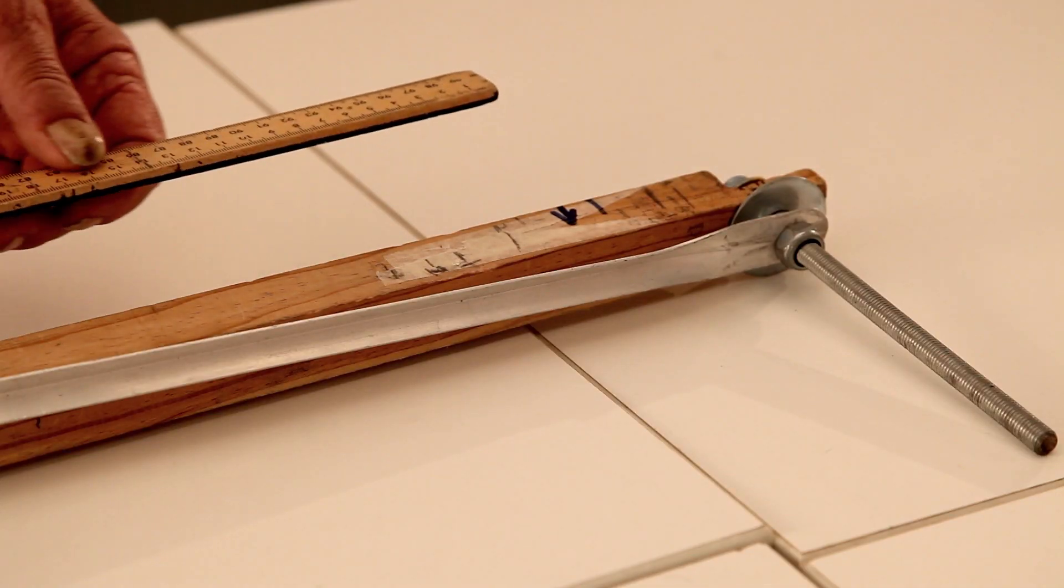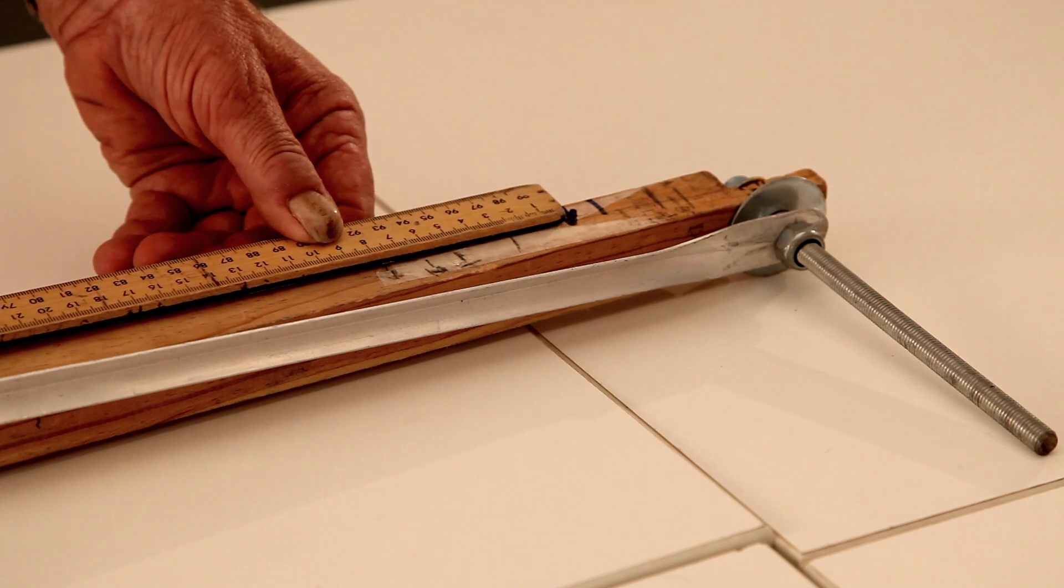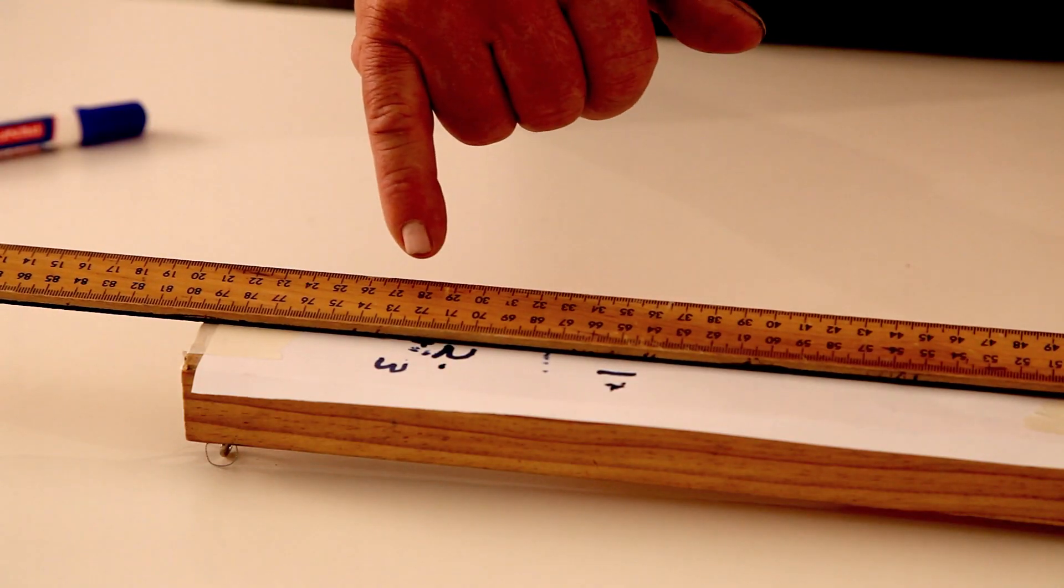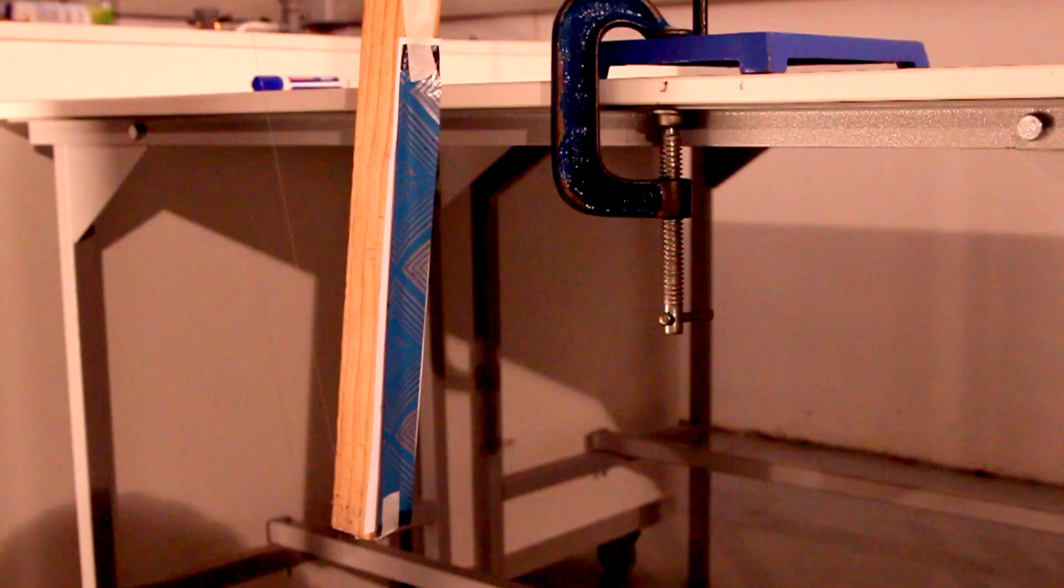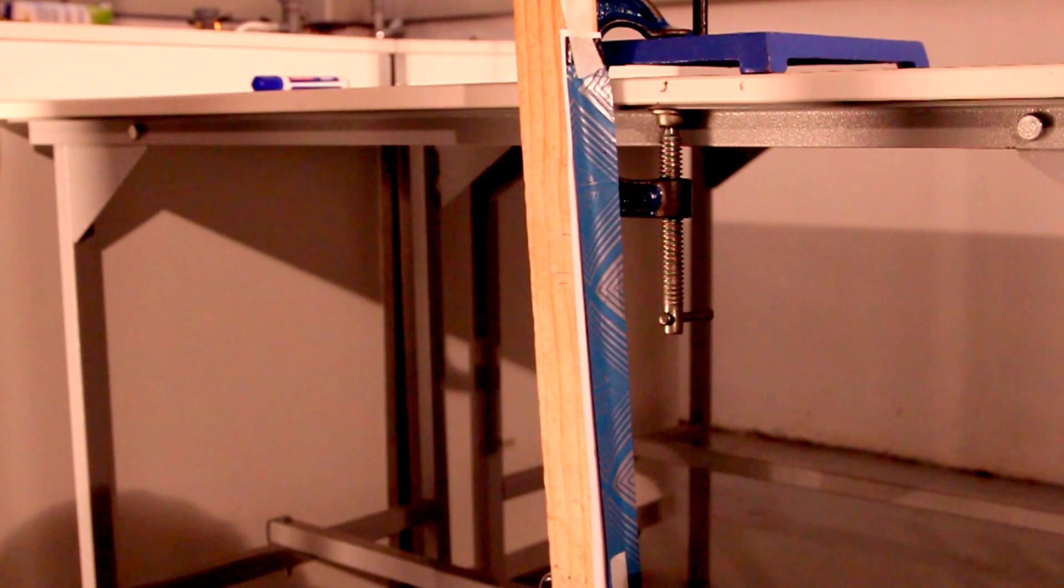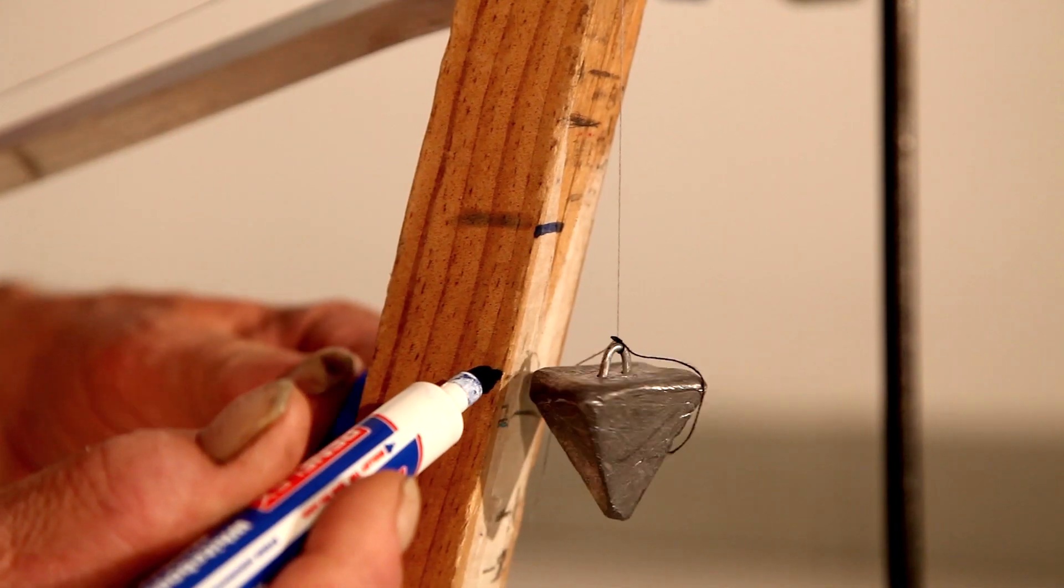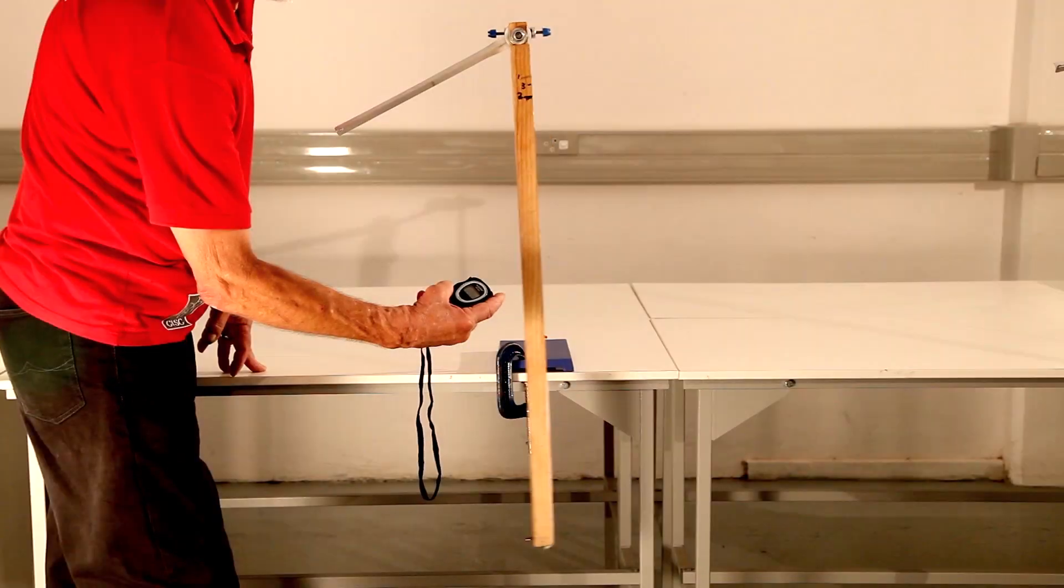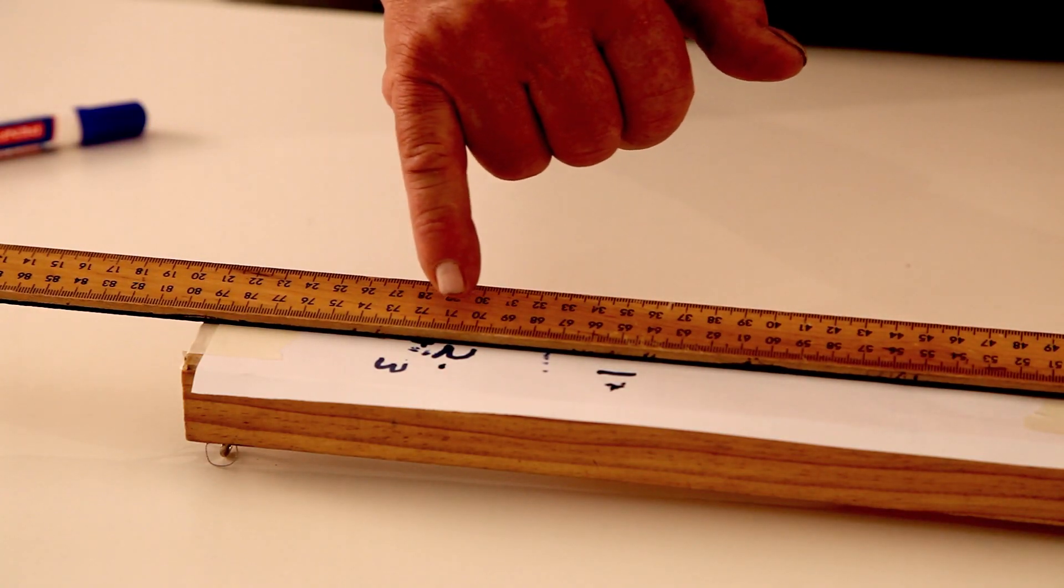We measure the distance between the two marks on the pendulum. This will be the displacement of the mass piece in the time of a quarter of a swing of the pendulum. This displacement will be recognized as delta x. Repeat this three times and take the average to get an accurate result.